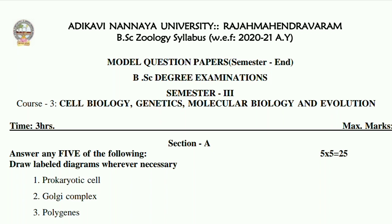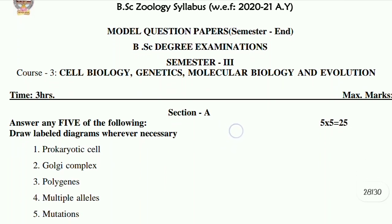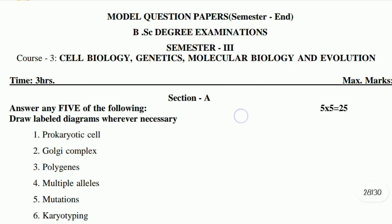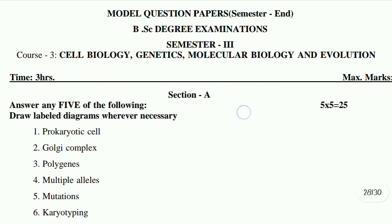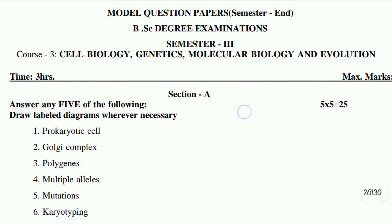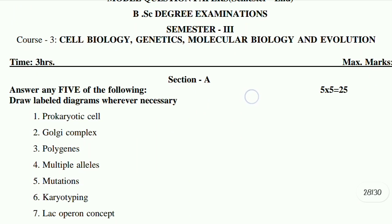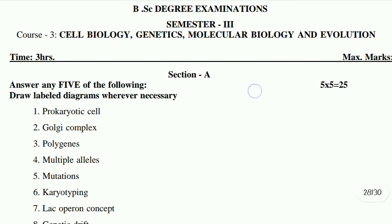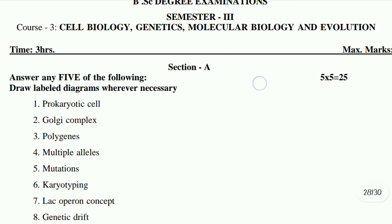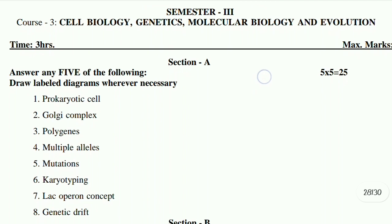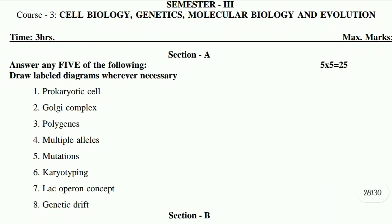So first, you can prepare your model paper — 60-70% questions repeat. For Shorts: Prokaryotic Cell, Golgi Complex, Polygenous, Multiple Alleles, Mutations, Karyotyping, Lac Operon Concept, Genetic Drift.